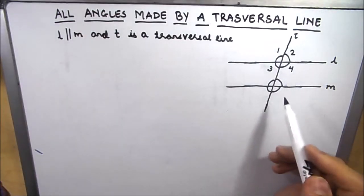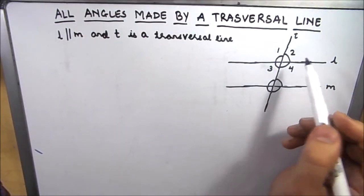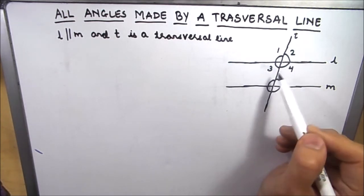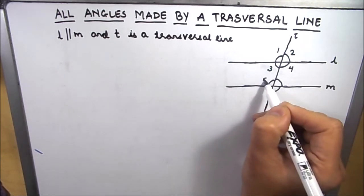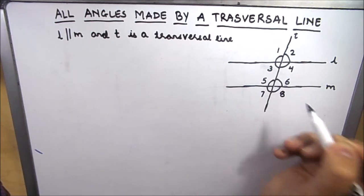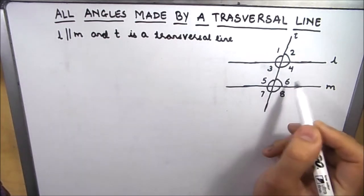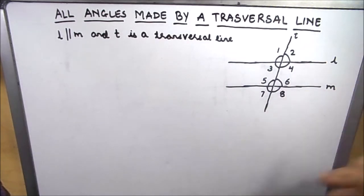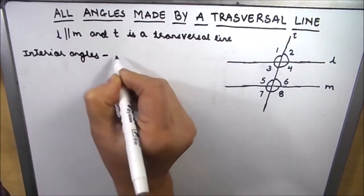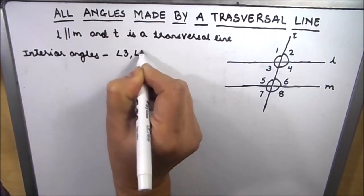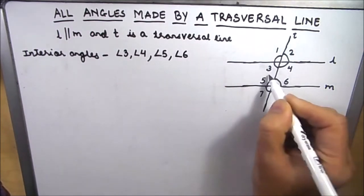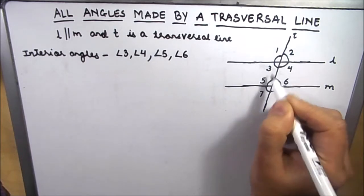There are eight angles made by this transversal, named angle 1, angle 2, angle 3, angle 4, angle 5, angle 6, angle 7, and angle 8. All four angles which are inside, between the two lines, are called interior angles. The interior angles are angle 3, angle 4, angle 5, and angle 6.